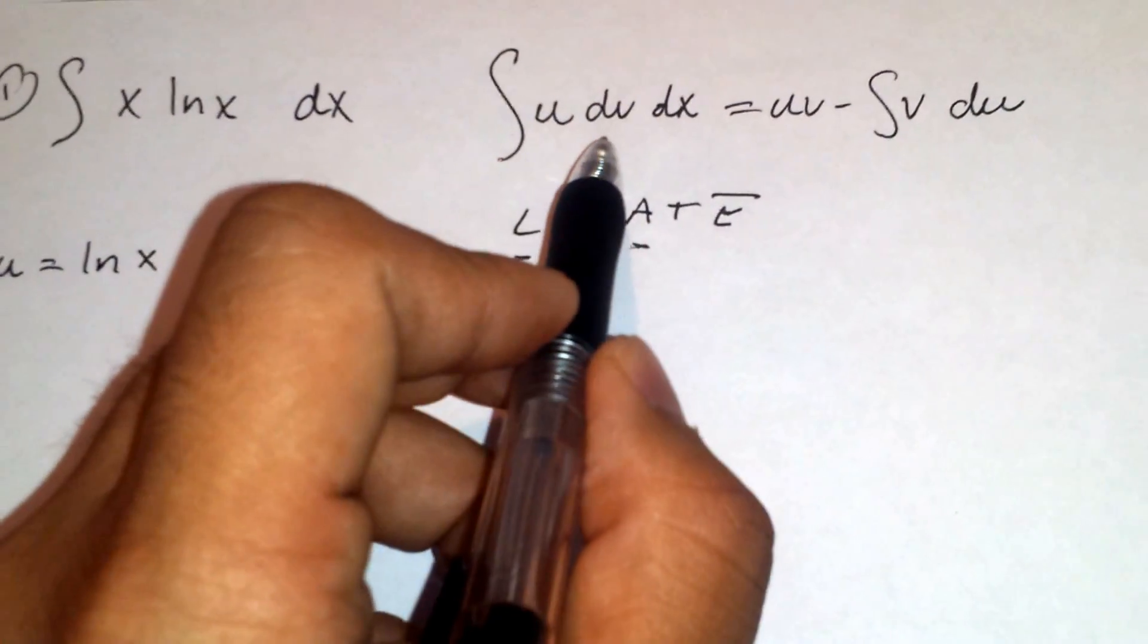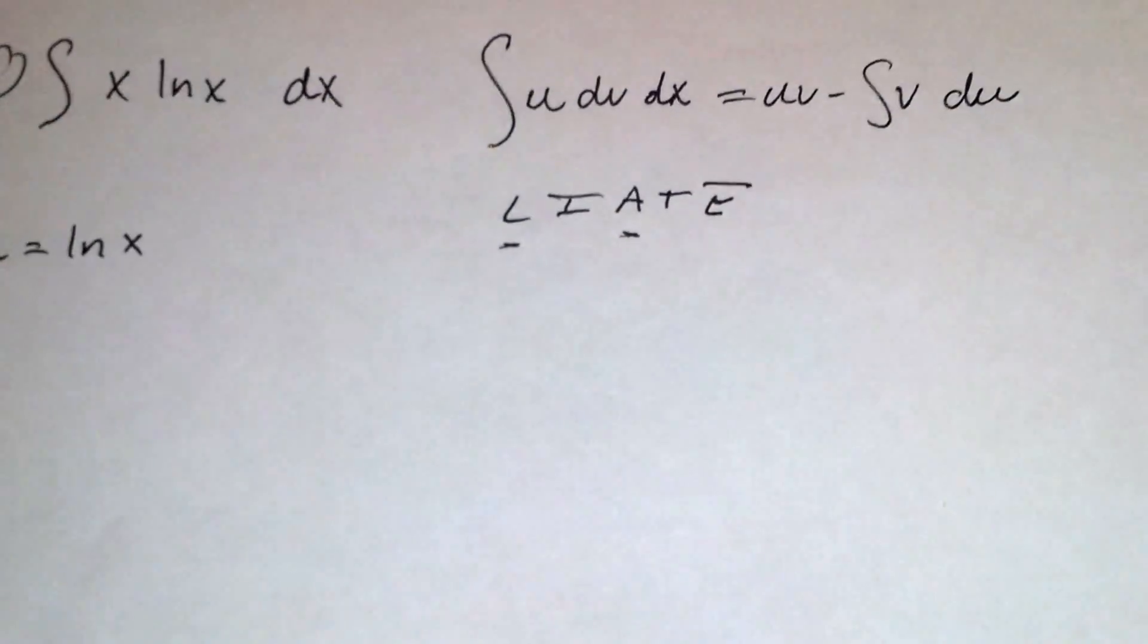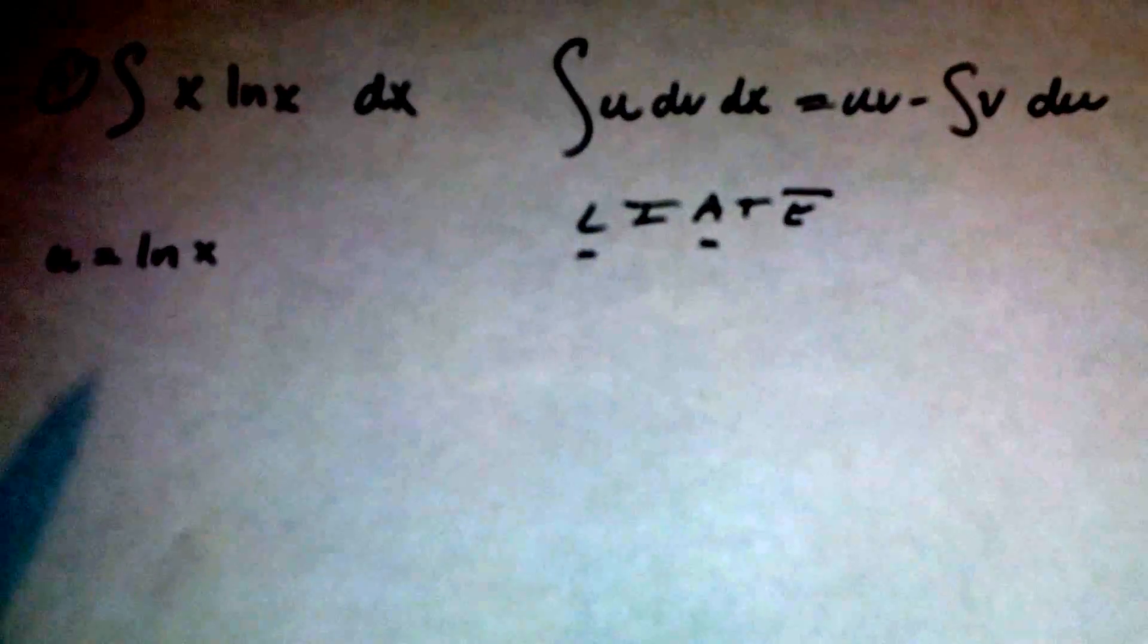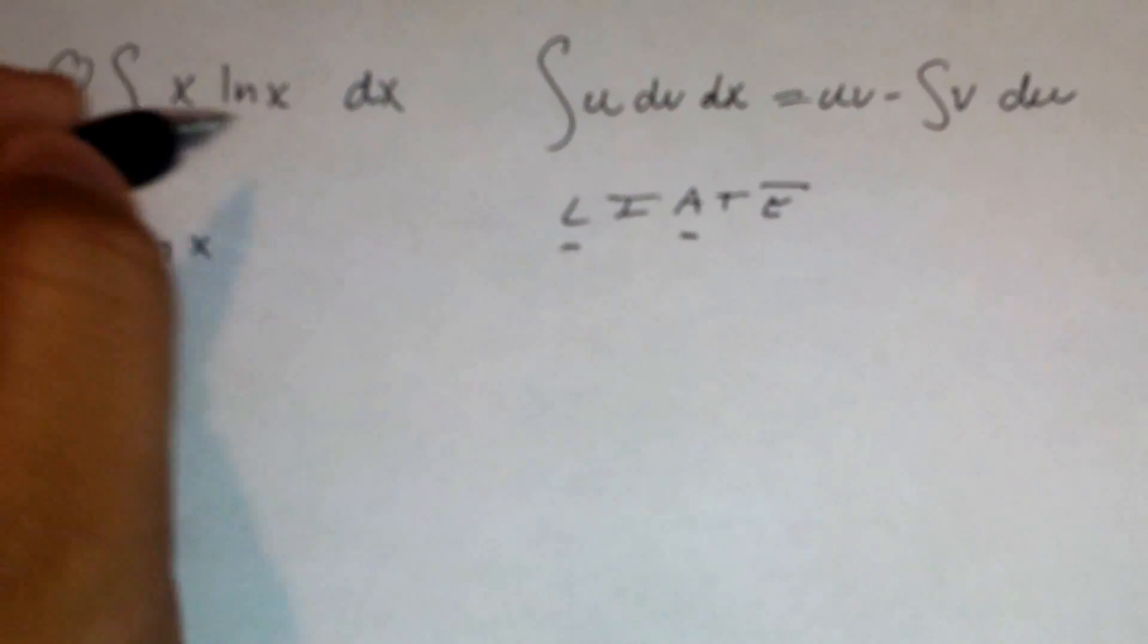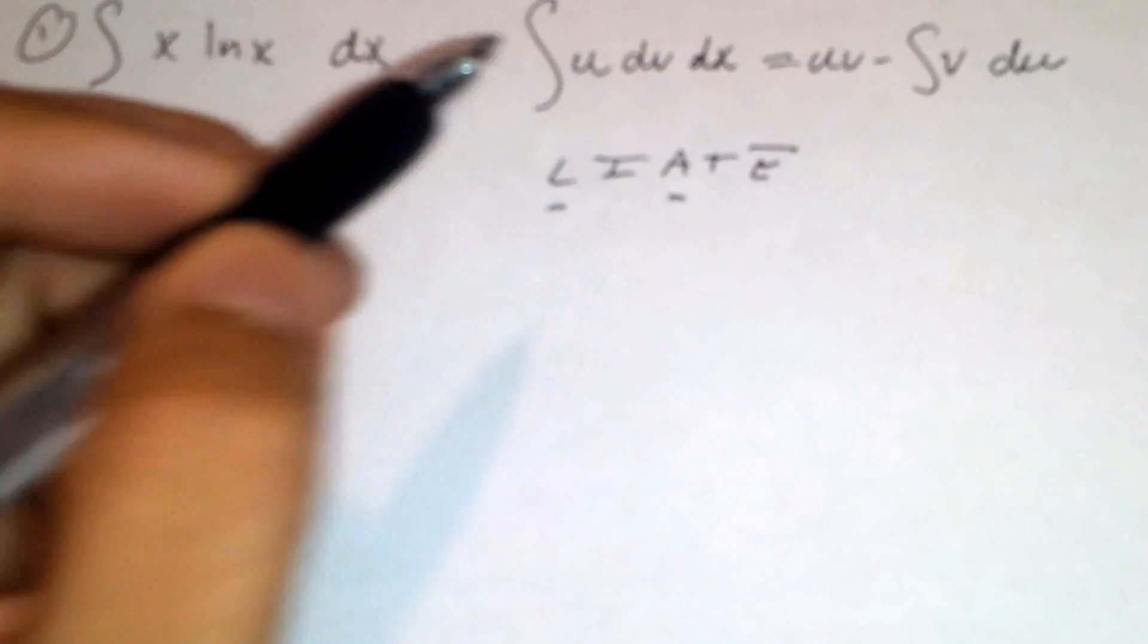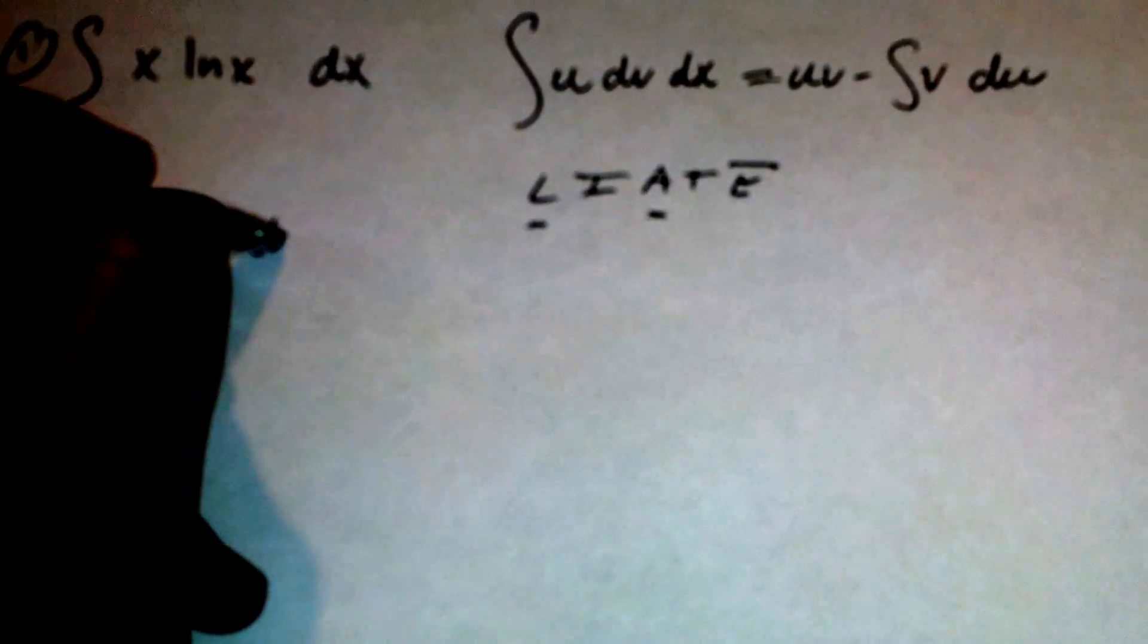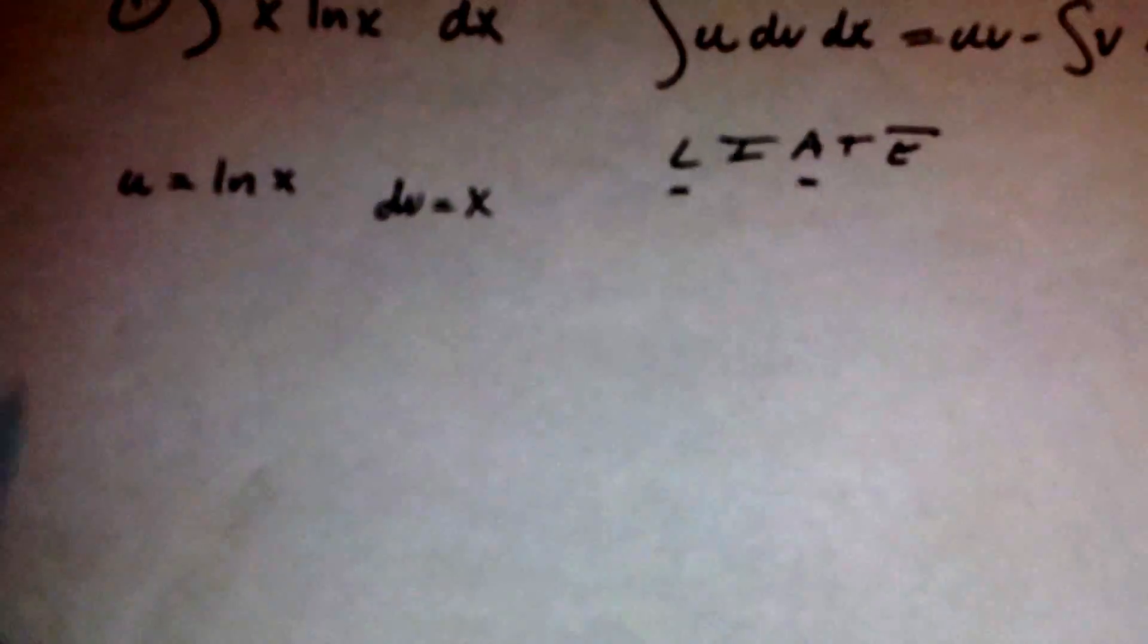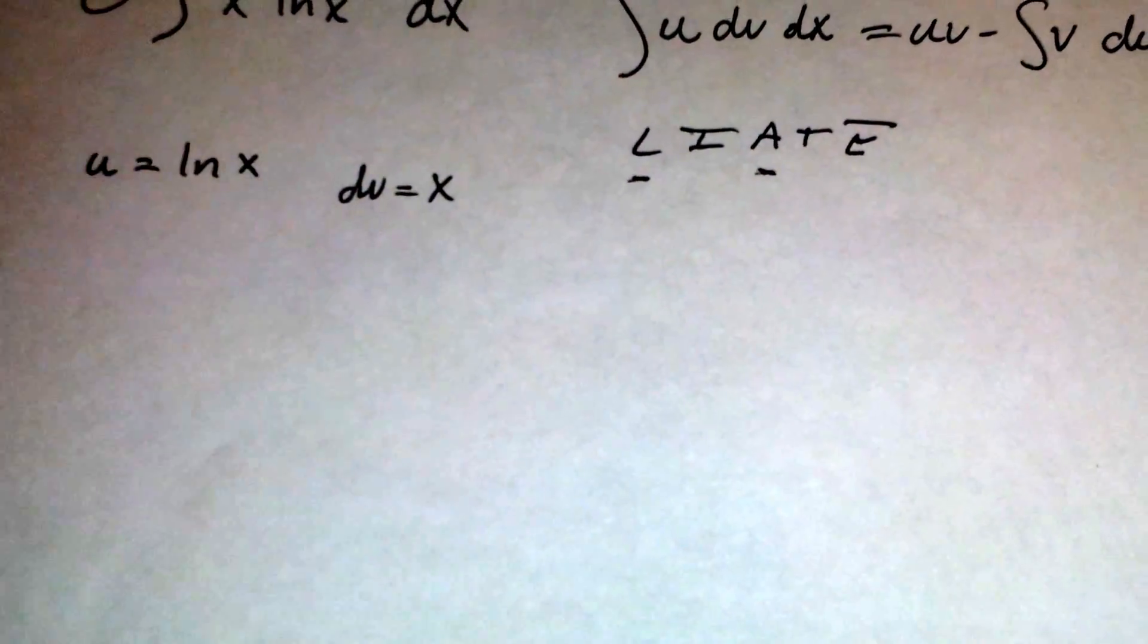We have u, we need to find dv, v, and du. We can find dv by taking whatever is left over. For example, ln was u, so what's left is x. So dv equals x.